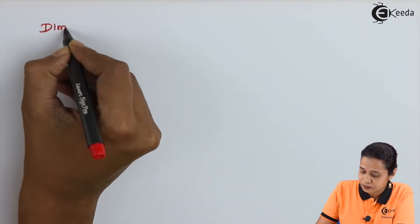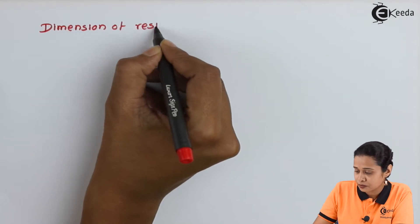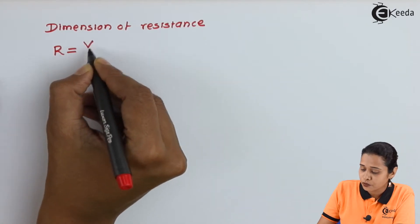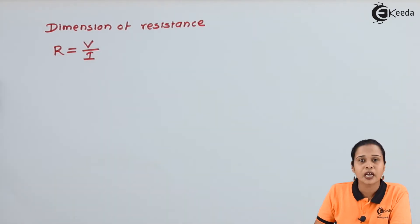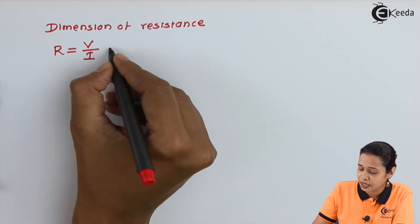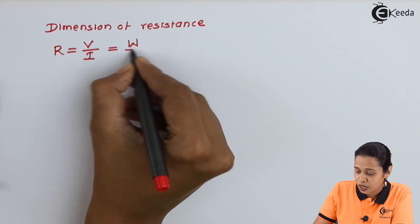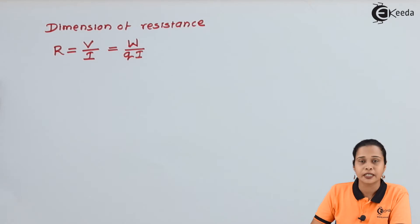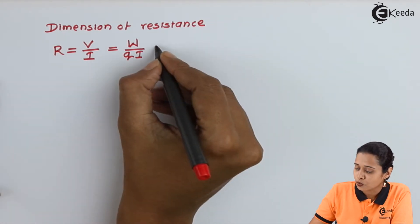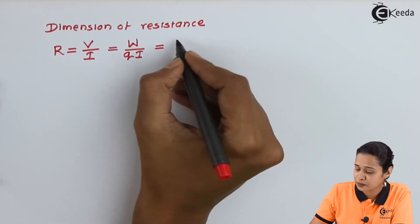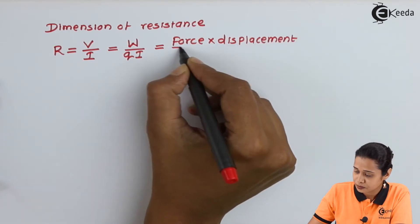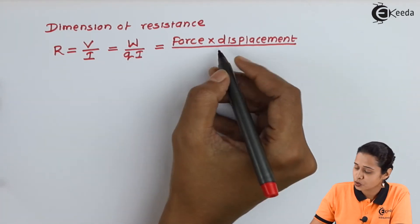Let us find out the dimension of resistance. We know resistance R = V/I. Now, the potential difference V can be written as work per unit charge, and I is current. We know work is force times displacement, so we have force times displacement upon charge times current.